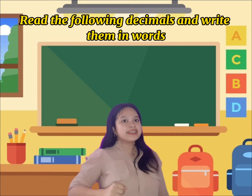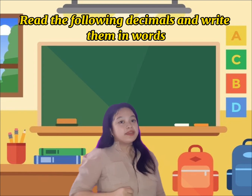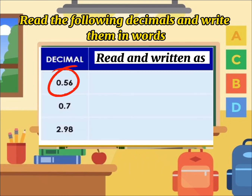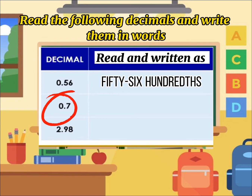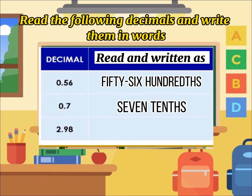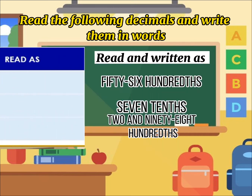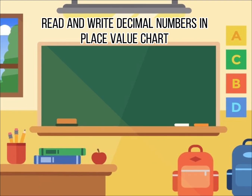Now let us read the following decimals and write them in words. The first decimal is 0.56 — it is read and written as fifty-six hundredths. The second decimal is 0.7 — it is read and written as seven tenths. The last decimal is 2.98 — it is read and written as two and ninety-eight hundredths.